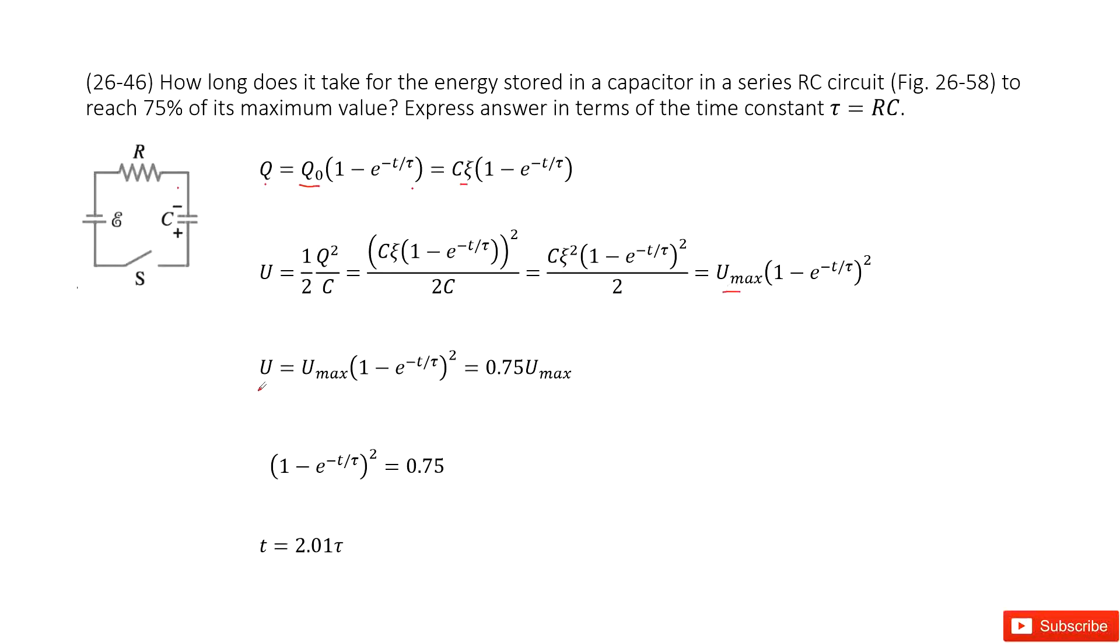So we can get the function look like this one. And ask you what time this U will be 75% of maximum. So this is 0.75 U max. And you can say U max, U max can cancel.